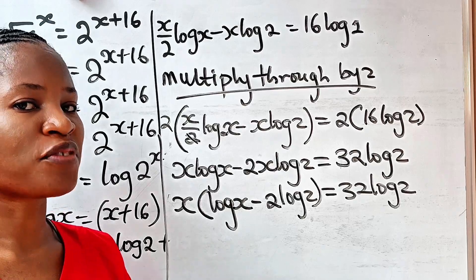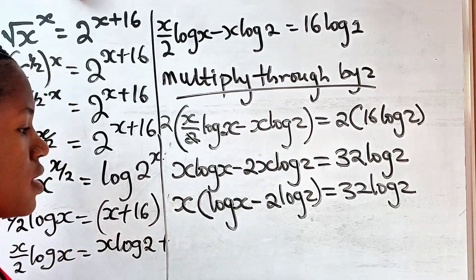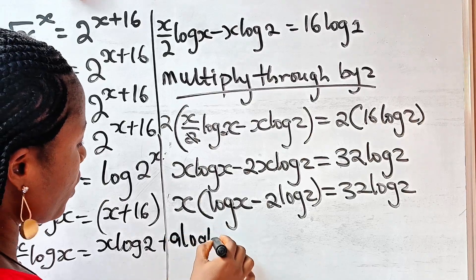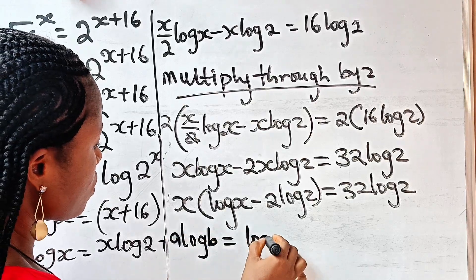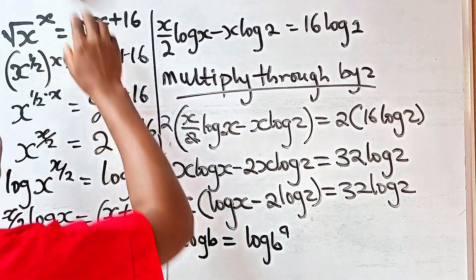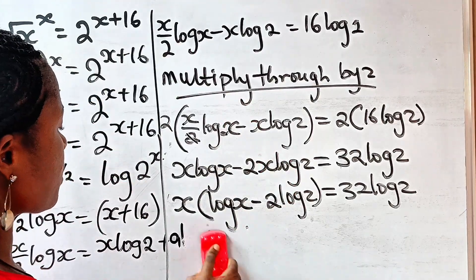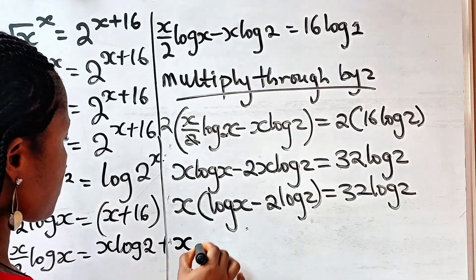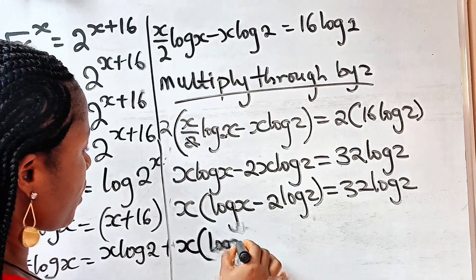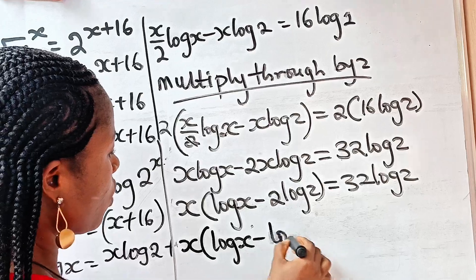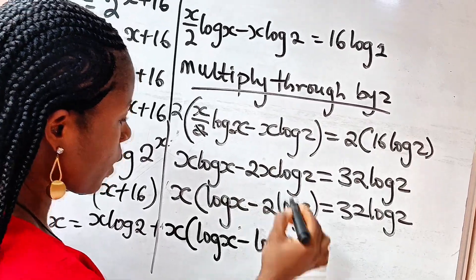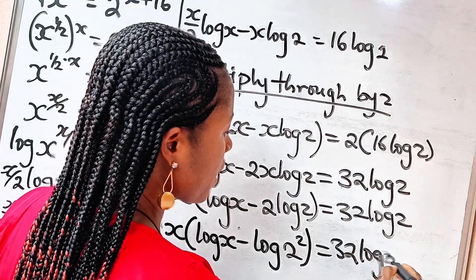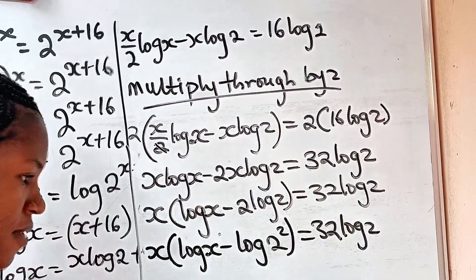Remember another law of logarithm: this law states that a log b is equal to log b raised to the power of a. So we apply it here — we have x multiplied by (log x minus log 2 squared), which means the 2 comes up as a power, giving log 4. So this is equal to 32 multiplied by log 2.